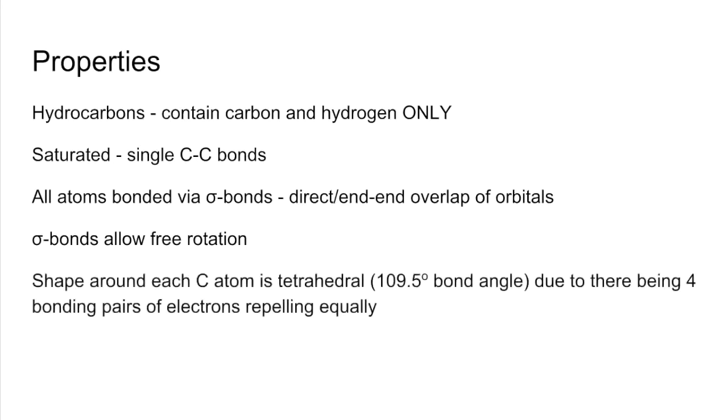Finally, the shape around each carbon atom in an alkane is tetrahedral, with a 109.5 degree bond angle, and that's because you've got four bonding pairs of electrons all repelling equally.